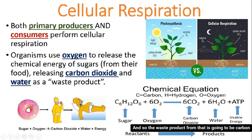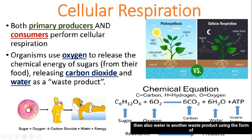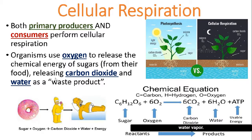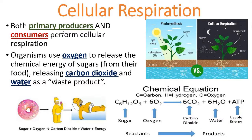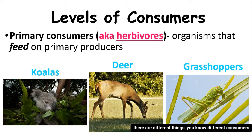The waste product of cellular respiration is carbon dioxide, so you can see that carbon dioxide gets released from plants and also gets released by us as we exhale. Water is another waste product, usually in the form of water vapor. Remember, there are different levels of consumers because different consumers feed on different types of matter — plant or animal.